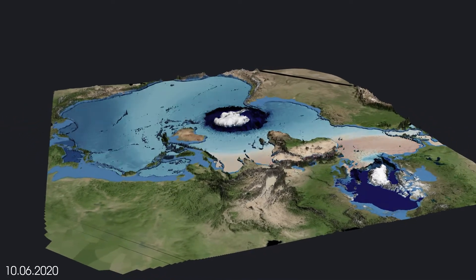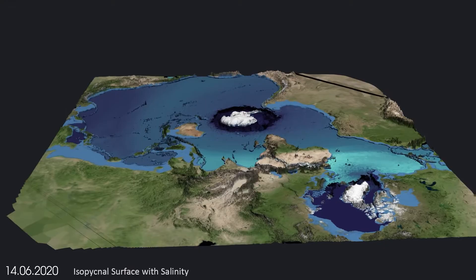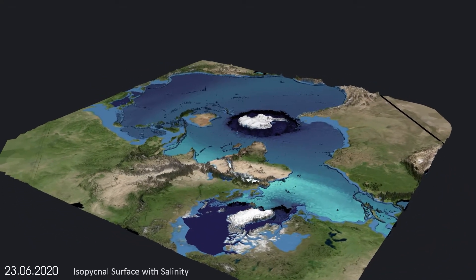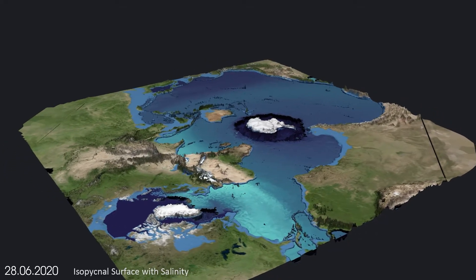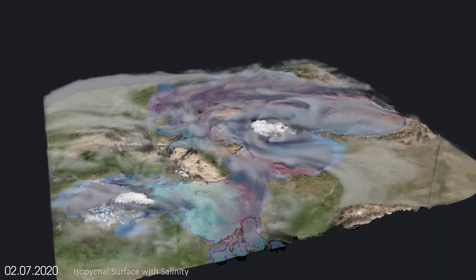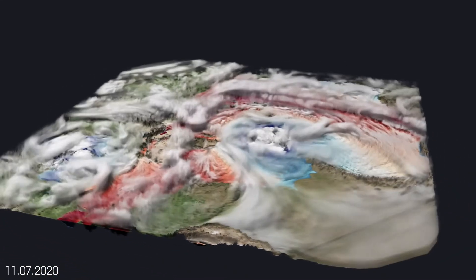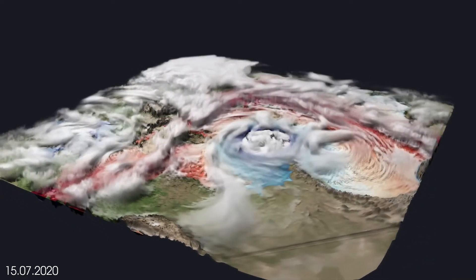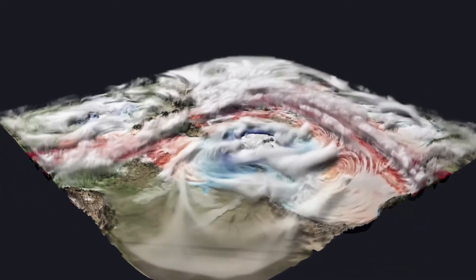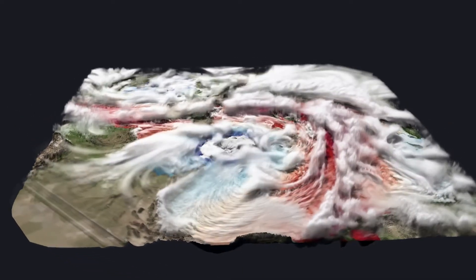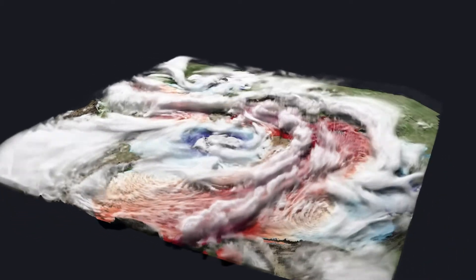Temperature, salinity, and depth information reveal more insight into transport processes happening inside the ocean. Even though we are able to run extremely high resolution weather and climate simulations on global and regional scales, there is still a lot for us to learn. Visualization is the key to not only understanding the data, but also the knowledge that is hidden inside.